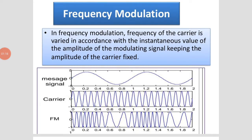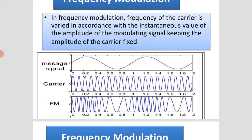In frequency modulation, the frequency of the carrier is varied in accordance with the instantaneous value of the amplitude of the modulating signal, keeping the amplitude of the carrier fixed, as shown in the slide. Firstly, the message signal — the input analog signal — is given, after that the carrier signal, and FM means frequency modulation, where the frequency of the carrier signal is varied in accordance with the frequency of the input signal.